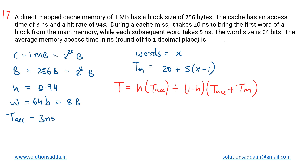This question is from cache organization. We are having a direct map cache memory with a size of 1 MB, or 2 to the power 20 bytes. The size of the blocks is 256 bytes, which is 2 to the power 8 bytes. The cache has an access time of 3 nanoseconds (t_cache), and the hit rate of this cache is 94%, so h = 0.94.